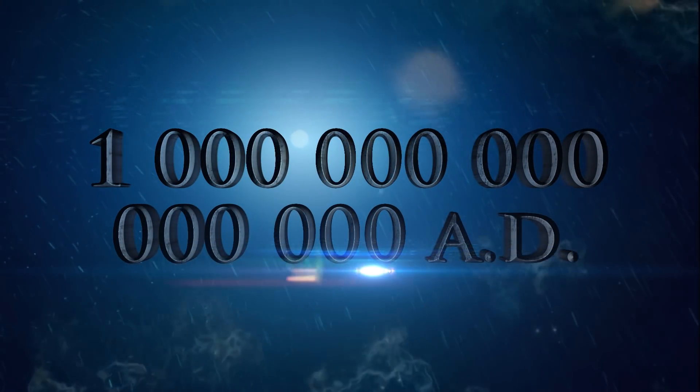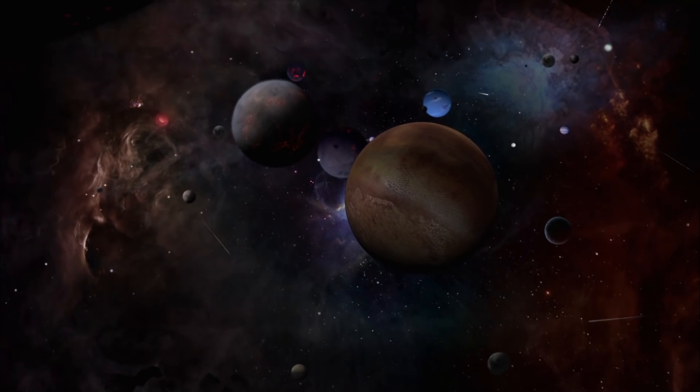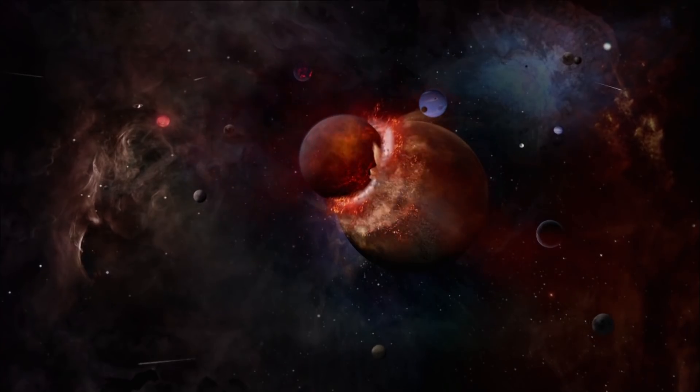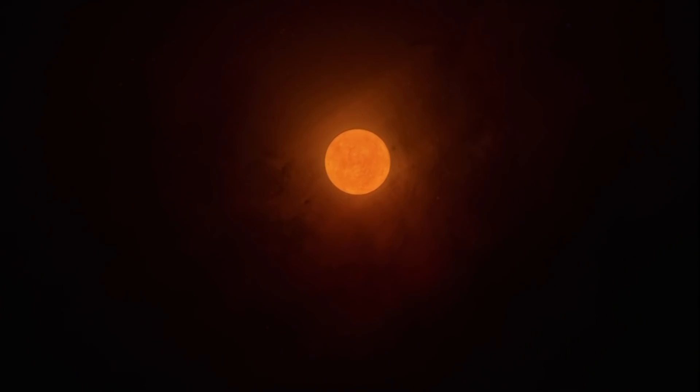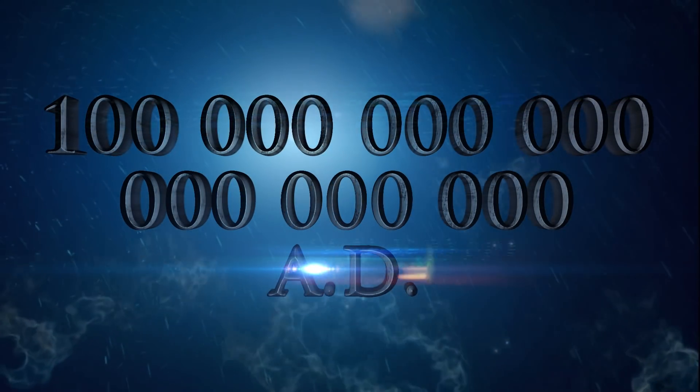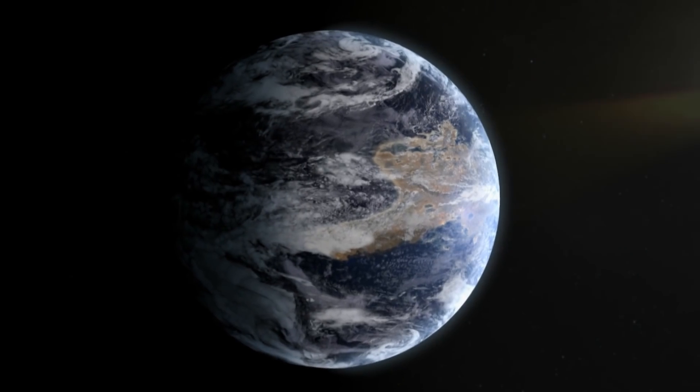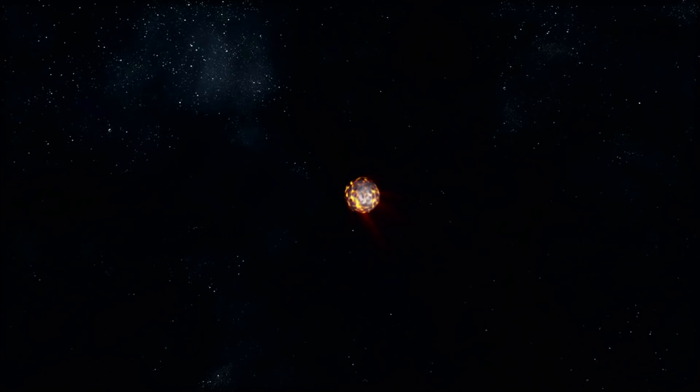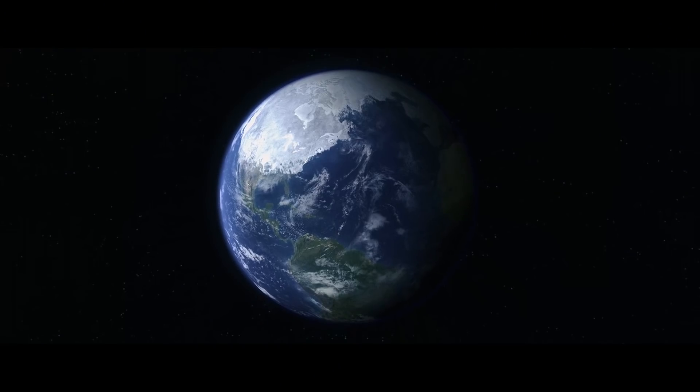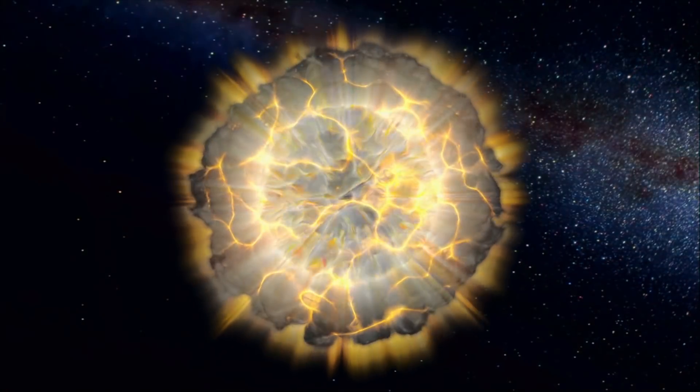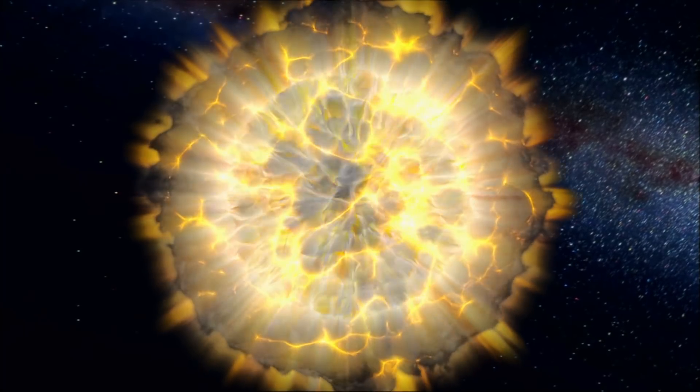One quadrillion years from now, estimated time until stellar close encounters detach all planets in star systems from their orbits. The Sun has cooled to five degrees above absolute zero. One hundred quintillion years from now, the Earth collides with the black dwarf Sun due to the decay of its orbit via emission of gravitational radiation, if the Earth is not ejected from its orbit by a stellar encounter or engulfed by the Sun during its red giant phase.